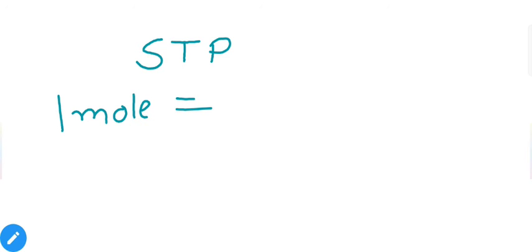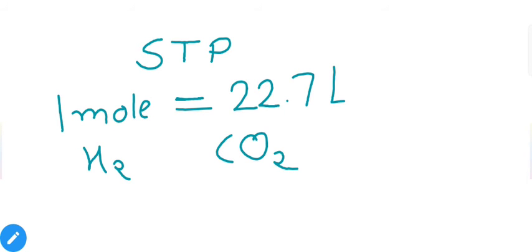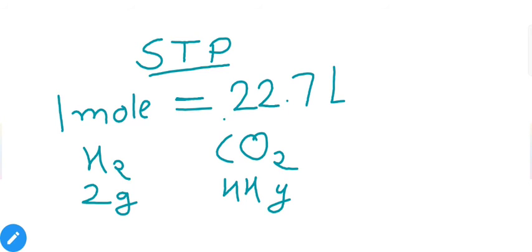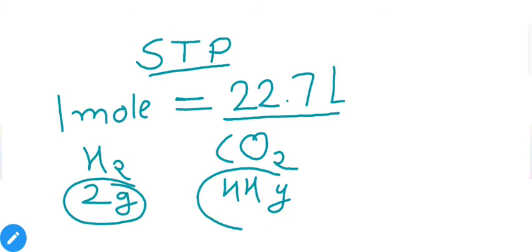To understand hydrogen storage, let's consider hydrogen's volume. At STP, any gaseous molecule occupies 22.7 liters per mole, regardless of molecular mass. Comparing two gases: H₂ has a molecular mass of 2 grams and CO₂ has 44 grams, so at STP in a 22.7-liter container we can fill only 2 grams of hydrogen but 44 grams of carbon dioxide — that means we can fill 22 times more mass of carbon dioxide than hydrogen.